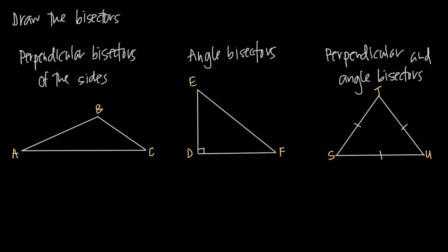In this video, we're going to be talking about perpendicular bisectors and angle bisectors, and we're going to be drawing a couple perpendicular and angle bisectors to sides and angles of a triangle. Remember that a bisector — 'bi' means two and 'sector' means a section or segment — so a bisector means the line that divides something into two equal sections.